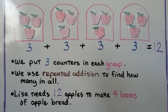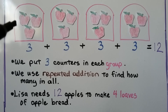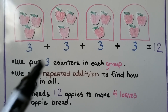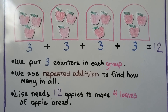Here we've got four loaves as our four groups. We put three counters in each group because she needs three apples for one loaf. We make equal groups — three apples into each of the four loaves. We use repeated addition to find how many in all.